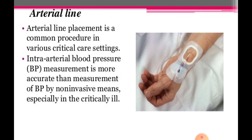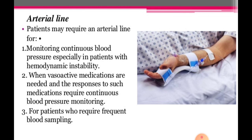Let's go to the arterial line. Arterial line placement is a common procedure in various critical care settings. Intra-arterial blood pressure measurement is more accurate than the measurement of BP by non-invasive means, especially in critically ill patients. Patients may require an arterial line for monitoring continuous blood pressure, especially in patients with hemodynamic instability when vasoactive medications are needed and continuous blood pressure monitoring is required.